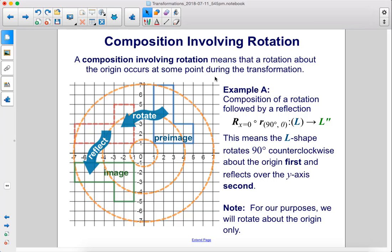Composition involving rotation. A composition involving rotation means that a rotation about the origin occurs at some point during the transformation.